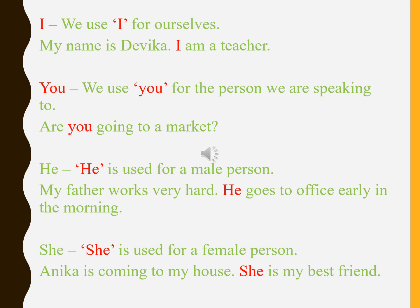Next is 'he' — as we have already discussed, 'he' is used for a male person. My father works very hard. He goes to office early in the morning. Next is 'she' — 'she' is used for a female person, that is a girl. Anika is coming to my house. Here Anika is a girl, that is a female gender. So she is my best friend.